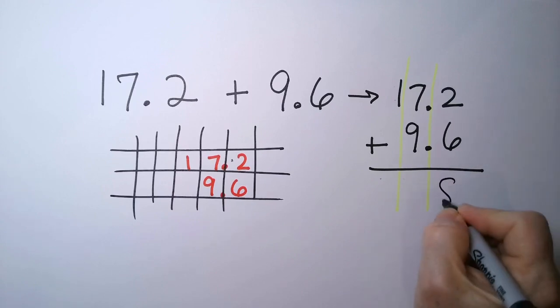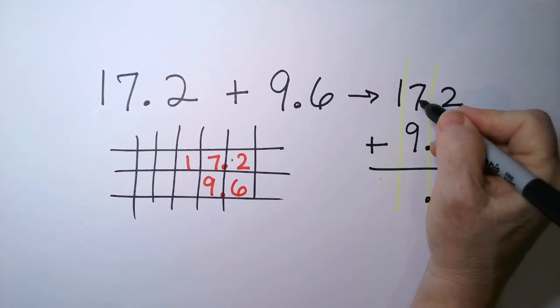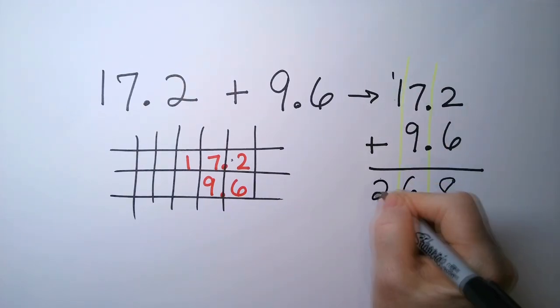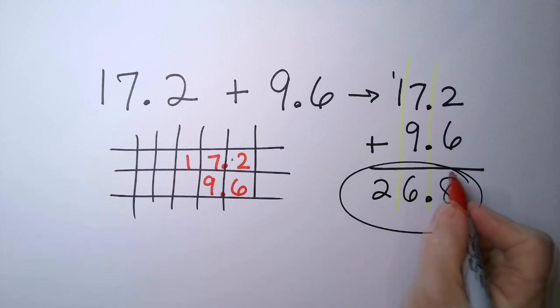So let's go back here. So 2 plus 6 is 8. Drop the decimal point. 7 plus 9 is a 6, and we have a carry. So my answer is 26.8.